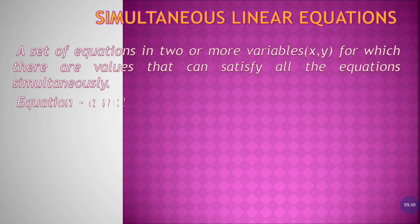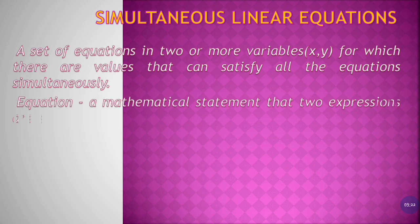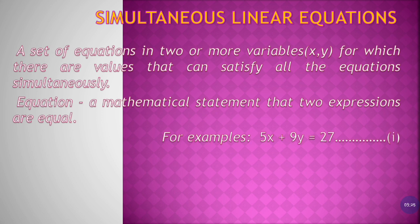And equation means it has an equals-to sign. For example, 5x plus 9y equals to 27 — it forms a line, that's why it is called linear, and it has an equals-to sign, that's why it is called an equation. We also have a second equation: 2x minus 2y equals to minus 16. Both equations are taken together — that is simultaneously — and we'll solve by substitution method.